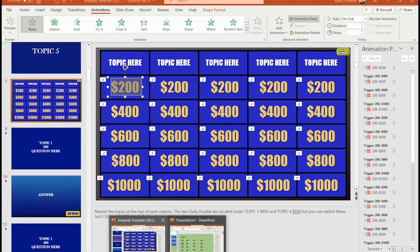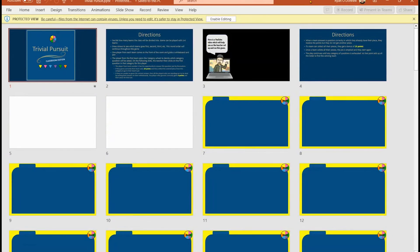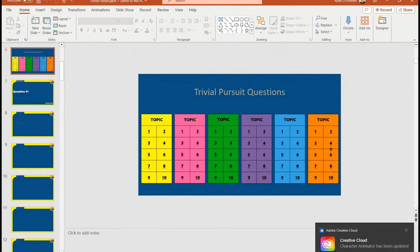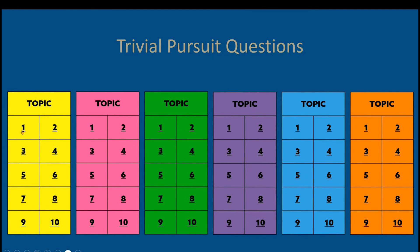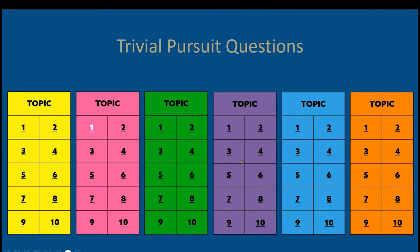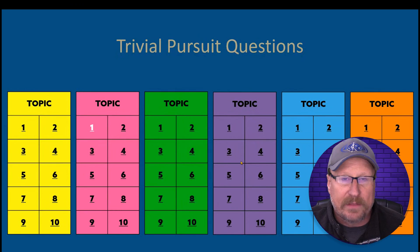Here's another example — a Trivial Pursuit style game. Multiple topics are color-coded. Clicking the pink topic jumps to that question, then back to the board. I couldn't make these disappear because there were six different colors — yellow, pink, green, and so on — so instead I used color-coding to denote which ones have been visited. Two simple methods: camouflage the color or make it truly disappear. Hope you find interesting ways to use these tips!